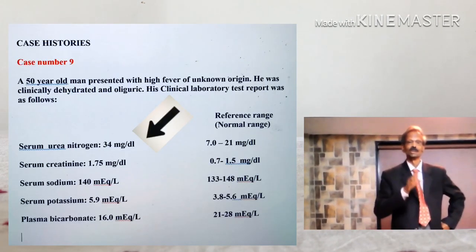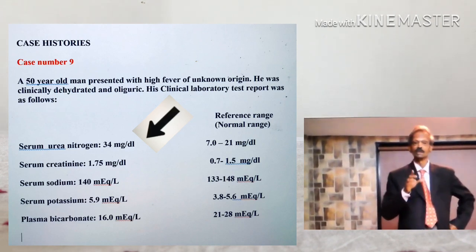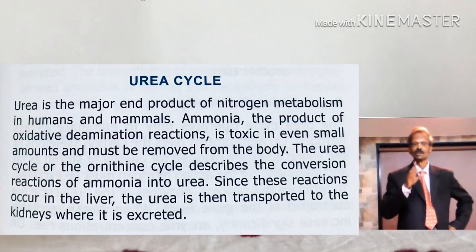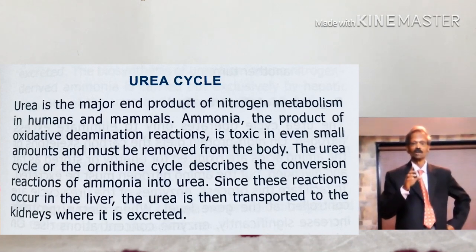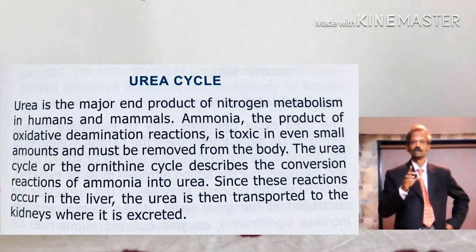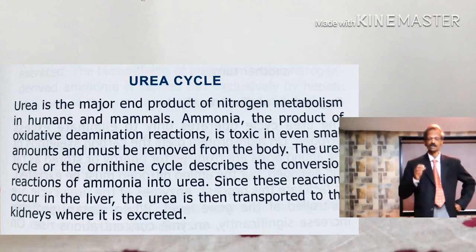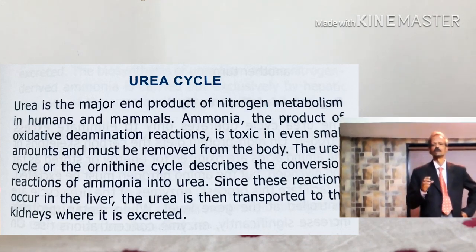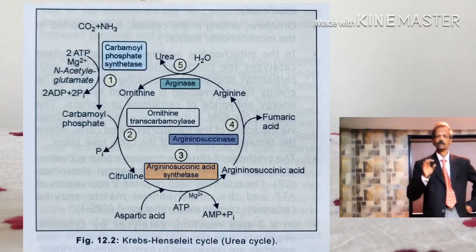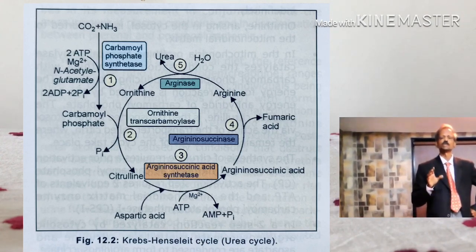The next question is: why does urea nitrogen increase in blood during prolonged high fever or pyrexia? The answer is, during high fever there is an increase in catabolic reactions. In these reactions, there is continuous breakdown of tissues — that means proteins — and metabolism of amino acids increases. The end product of amino acid metabolism is urea, and that is why urea rises in blood.